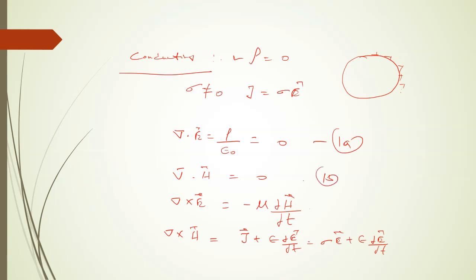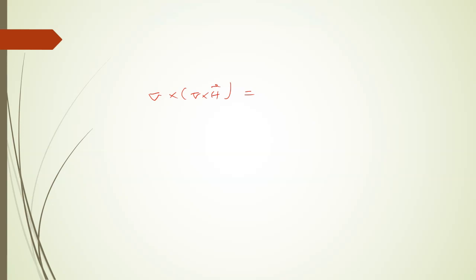Now what we have to do: we will take the curl of equation 1d. When we derived the result for electric field intensity we took the curl of equation 1c, but for H we will take the curl of equation 1d.